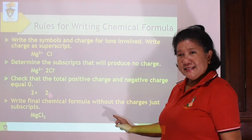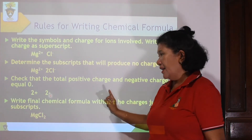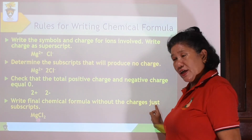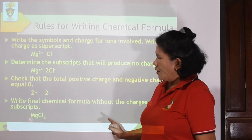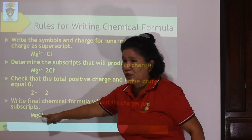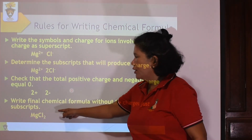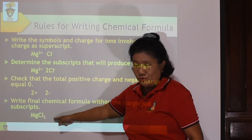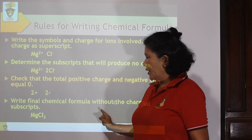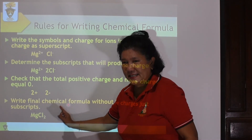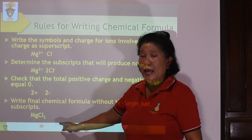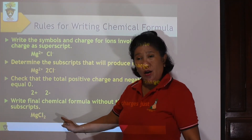Now let us write the final chemical formula. Magnesium will have only 1 atom — no need to place 1 there. Your chlorine will have 2. Therefore, your final chemical formula will be MgCl2. What is the name of this compound? This is magnesium chloride, MgCl2.